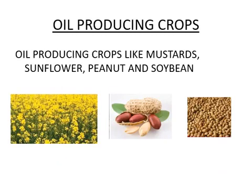Next are oil-producing crops — those crops from which we get oil. Examples include mustard, sunflower, peanut, and soya bean. These oils are used by us in many ways — for applying on your hair, for cooking food, for massage. You can also ask your mother which oil she uses in the kitchen while cooking.